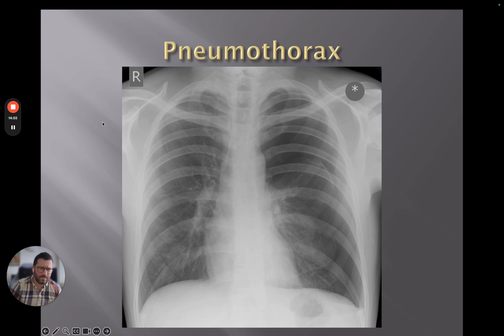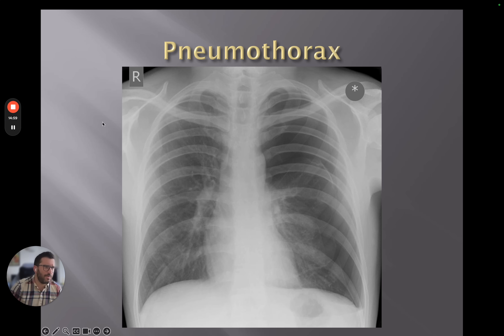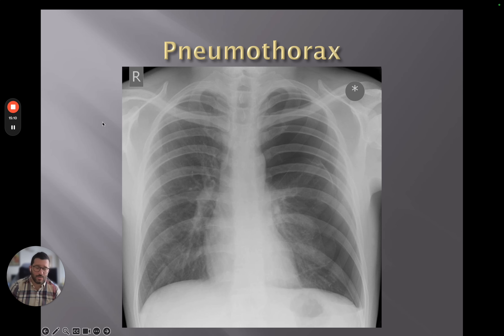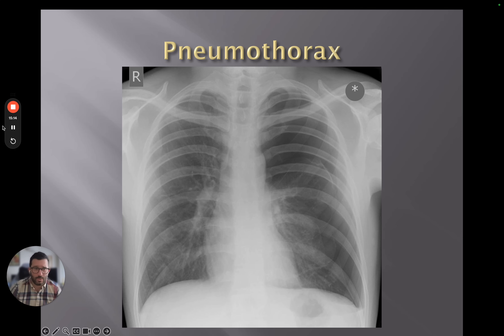Pneumothoraces may be described as primary spontaneous — no underlying lung disease — secondary spontaneous, where underlying lung disease is present, or traumatic, where trauma to the thorax has caused the pneumothorax.